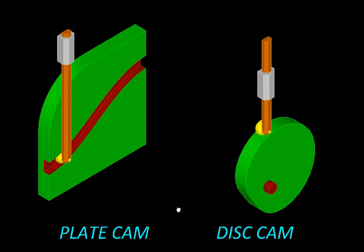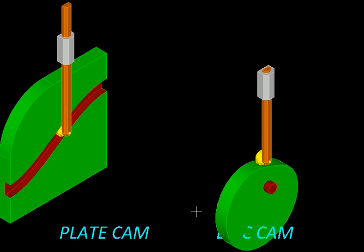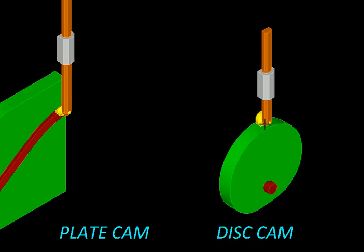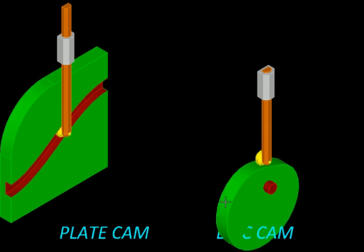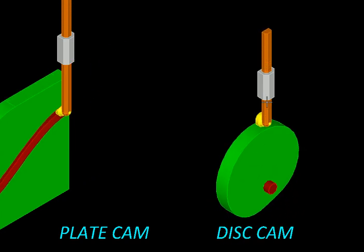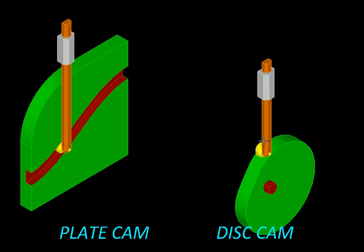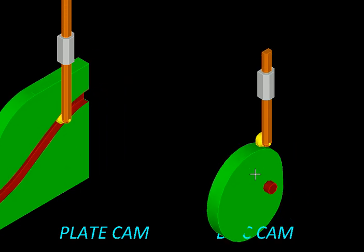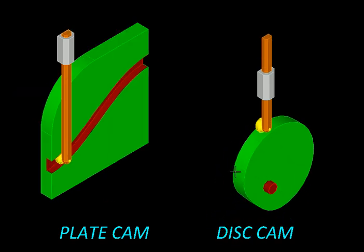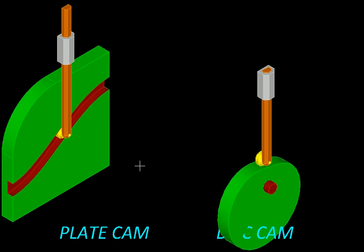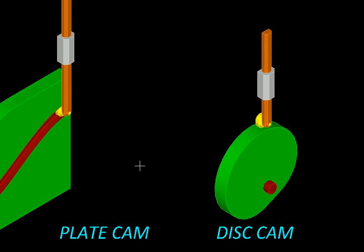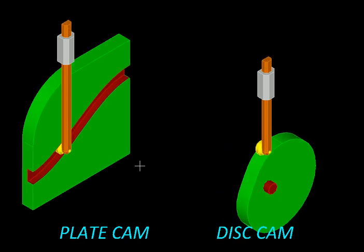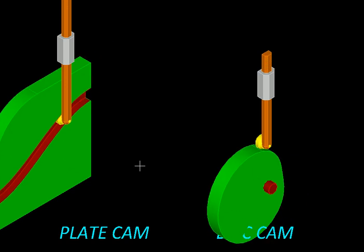Now, to make it more compact, we can have this whole graph wrapped around a circle. So as it moves, it achieves the same motion. But here, it not only saves space, but also gives us continuous operation. In a plate cam or a wedge cam, we will have to wait for the plate or wedge to come back and start all over again.